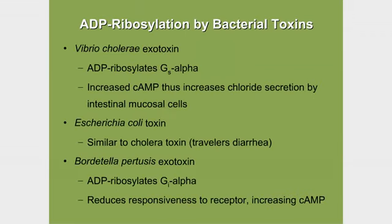On this figure are some of the bacterial toxins once again. Cholera toxin ADP ribosylates alpha S of GS, increasing cyclic AMP by increasing chloride secretion by the intestinal mucosal cells. What's happening is that by ADP ribosylation of alpha S, alpha S works better — we're stimulating the stimulator.